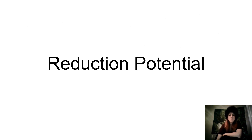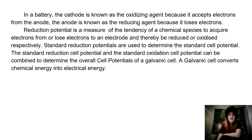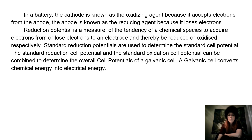Reduction potential. In a battery, the cathode is known as the oxidizing agent because it accepts electrons from the anode. The anode is known as the reducing agent because it loses electrons. Reduction potential is a measure of the tendency of a chemical species to acquire electrons from, or lose electrons to, an electrode, and thereby be reduced or oxidized, respectively. Standard reduction potentials are used to determine the standard cell potential. The standard reduction cell potential and the standard oxidation cell potential can be combined to determine the overall cell potential of a galvanic cell.